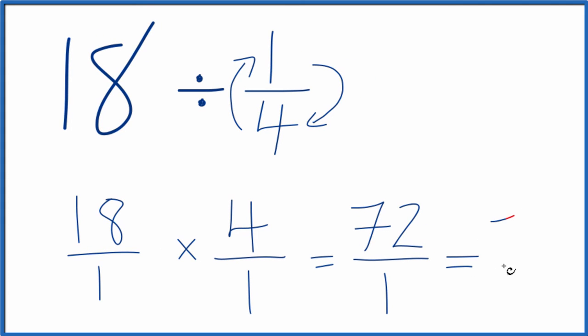72 over 1, that's 72. If you divide 72 by 1, you get 72. So 18 divided by 1 fourth is 72.